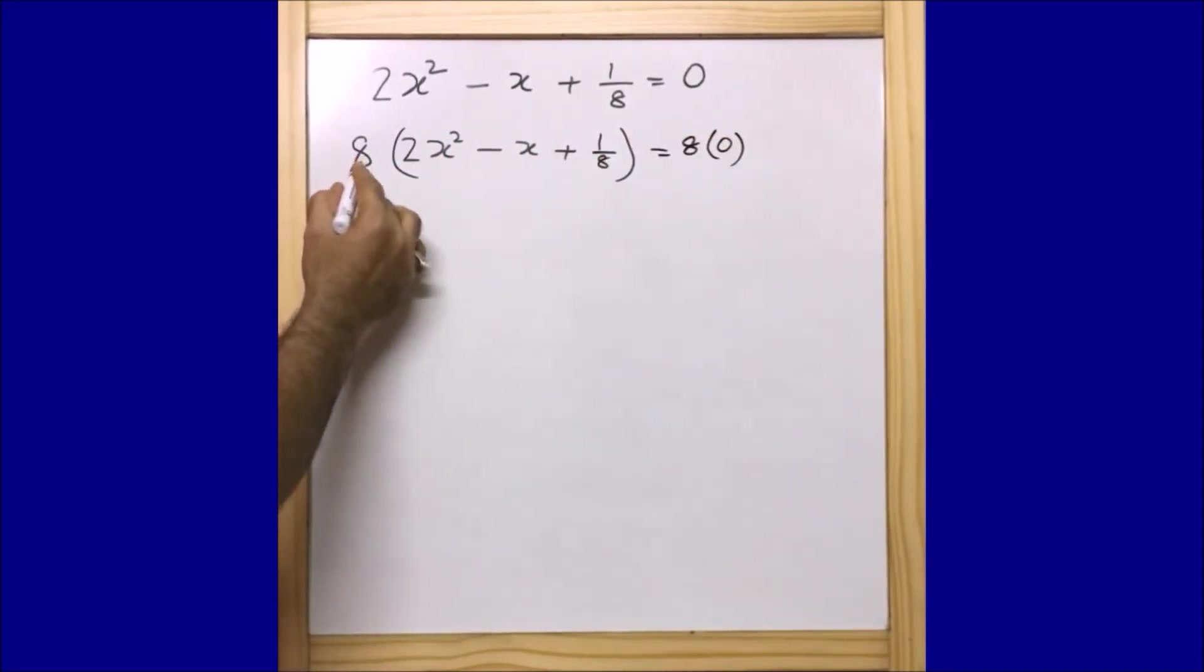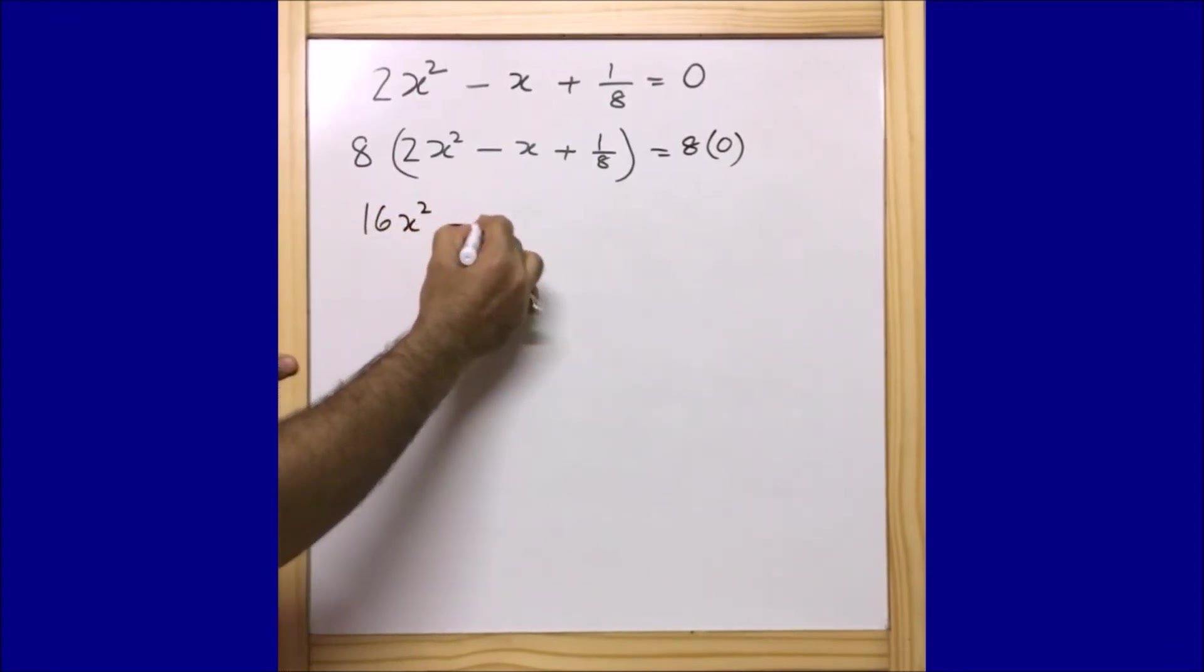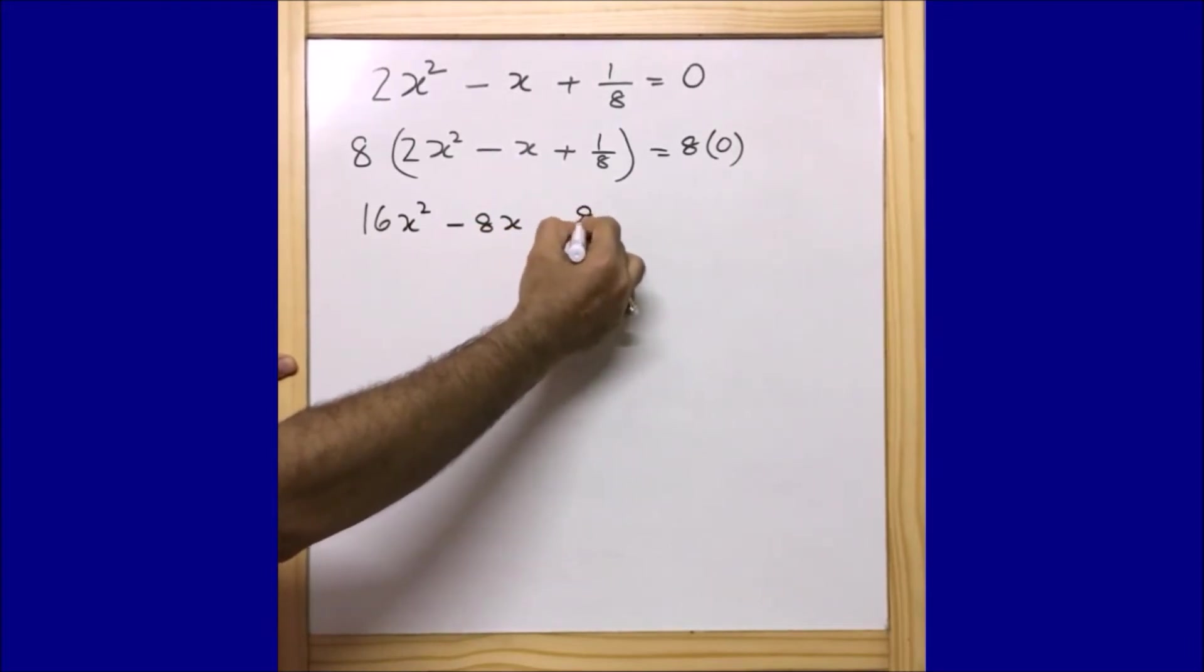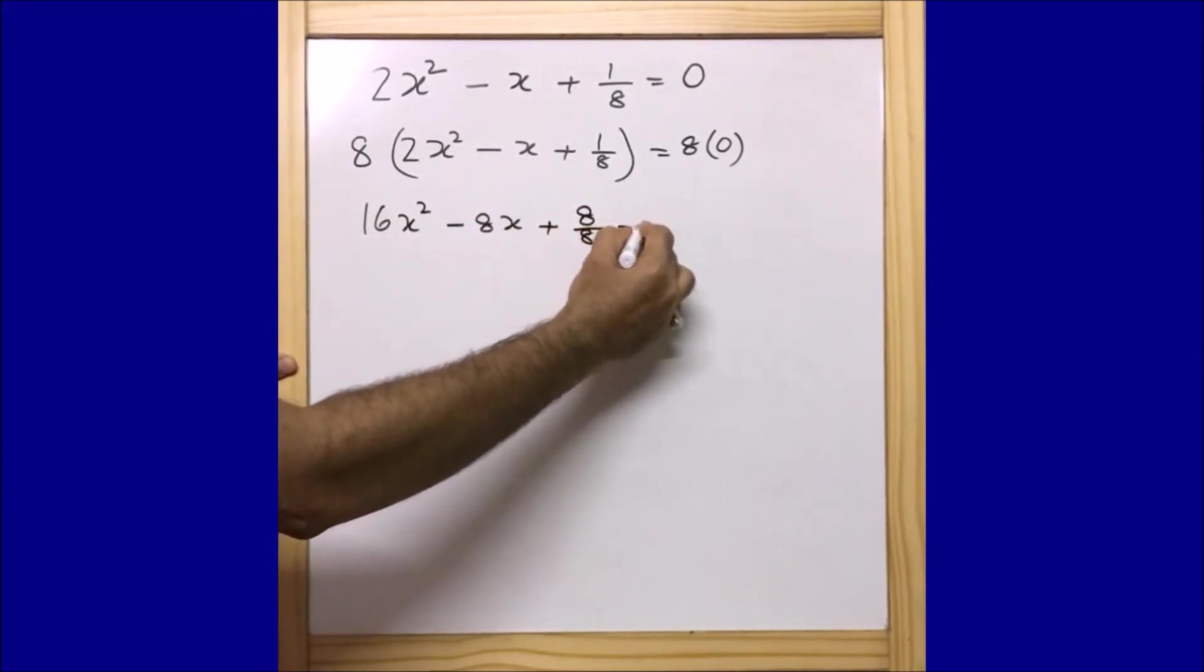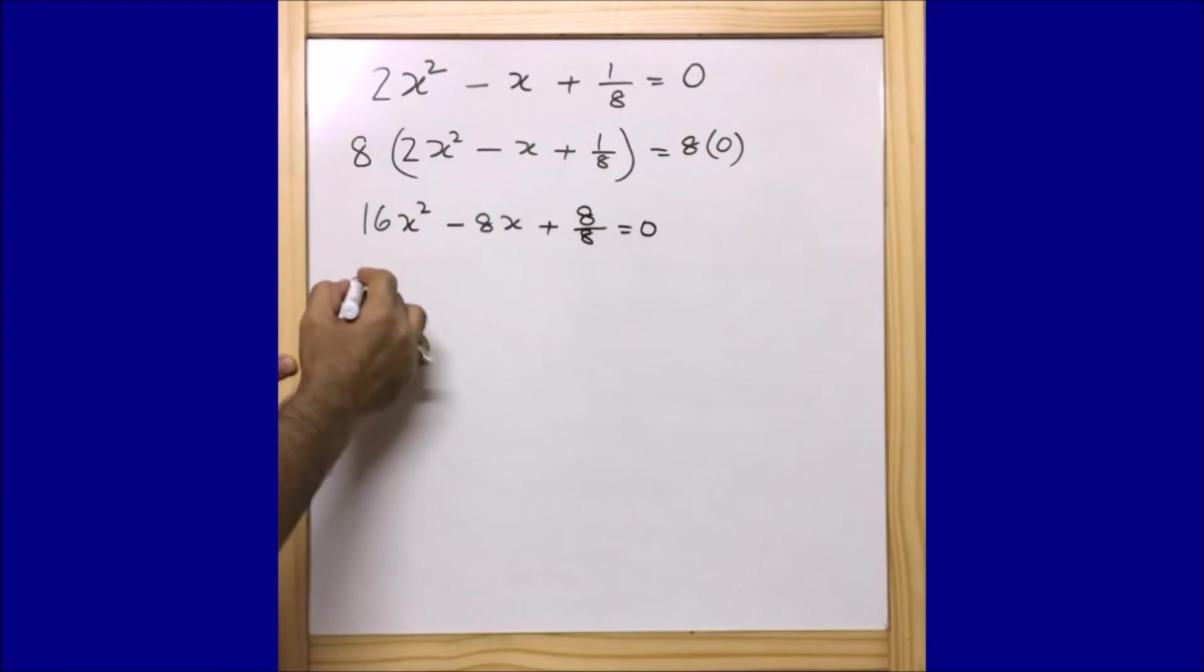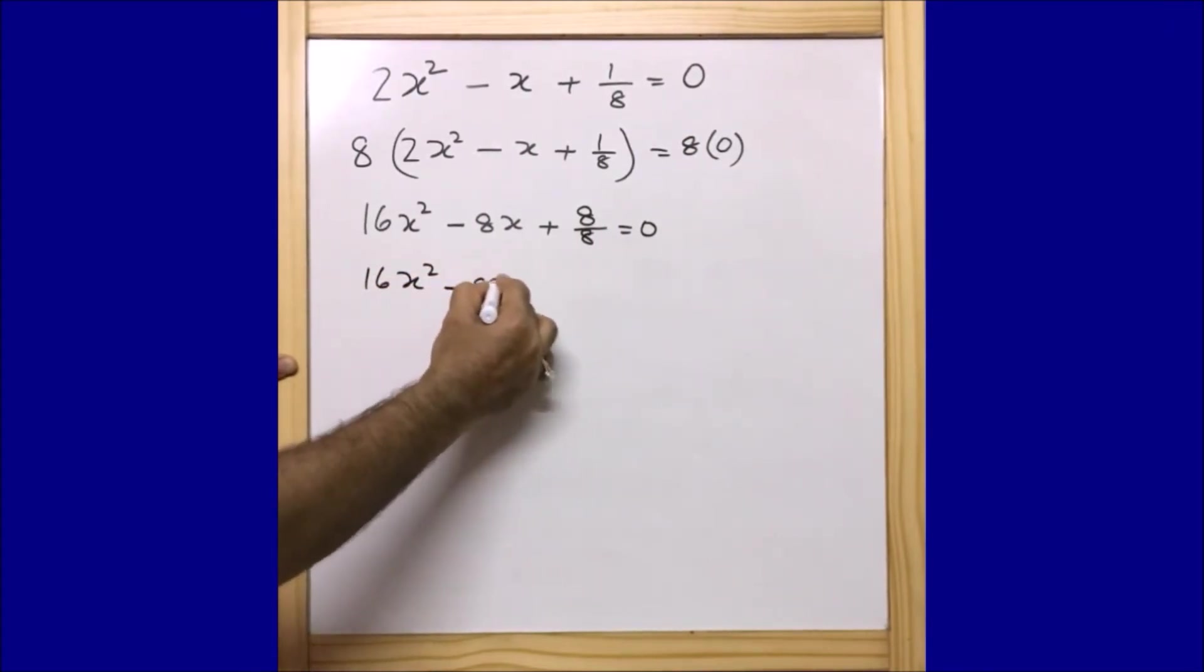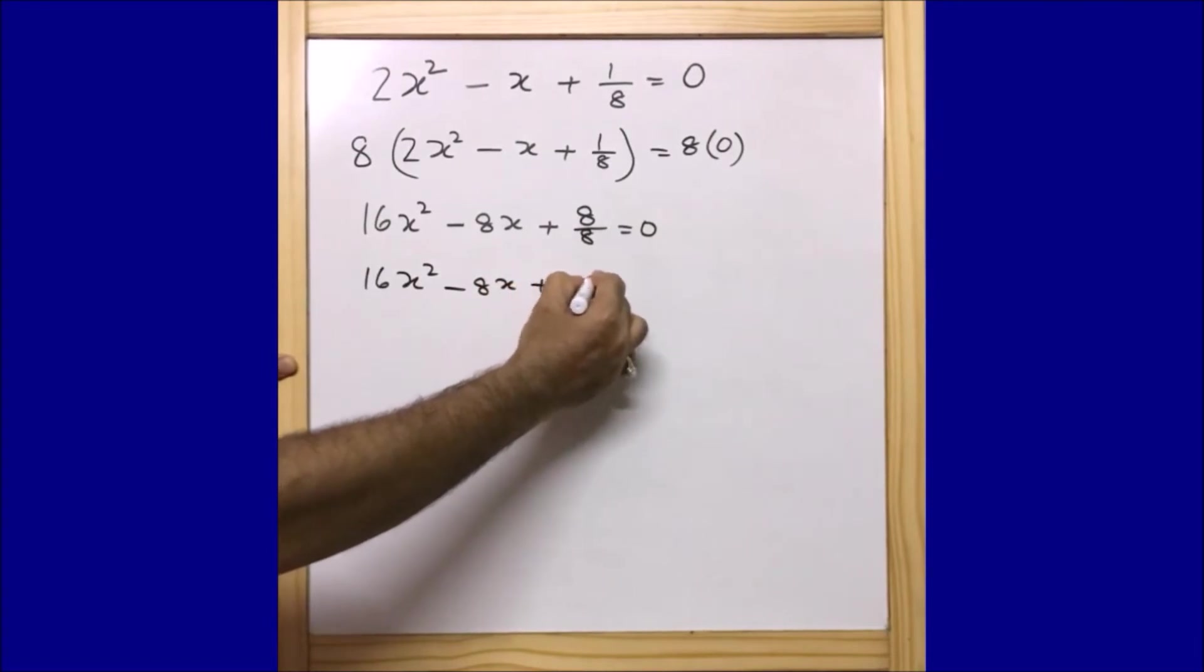Now 8 × 2 is 16x^2, minus 8x, plus 8/8 = 0, or 8 × 0. Or I can write this as 16x^2 - 8x + 1 = 0.